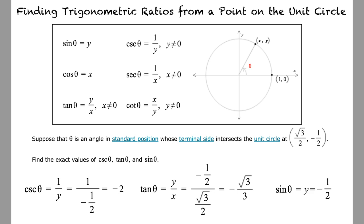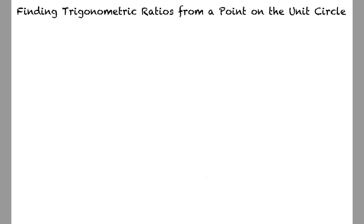This topic is starting to make sense now, but let me summarize just to be sure. We begin by identifying the trigonometric identities needed to solve the given problem. Next, we substitute the appropriate x and y values from our coordinate point into the trigonometric identities. Solving these equations yields our values for the trigonometric ratios based on the point on the unit circle.